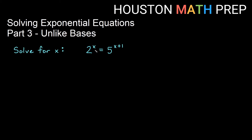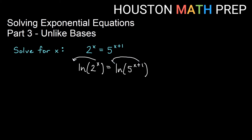Looking at another example: 2 to the x equals 5 to the x plus 1. Since 5 is not a power of 2, I can't make the bases match — these are unlike bases. I'll again choose natural log, because it's a button on the calculator and makes decimal approximations easy. Taking the natural log of both sides gives ln of 2^x equals ln of 5^(x+1). Using the power rule for logs, we move the exponents out front: x times ln 2 equals (x plus 1) times ln 5.